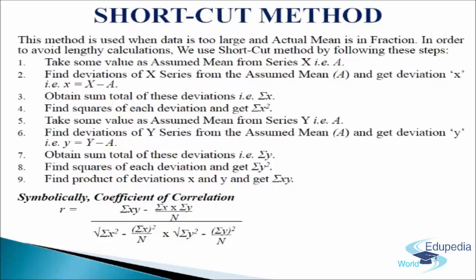After that we take some value as assumed mean from series y, that is 'a'. Then we find deviations of y series from the assumed mean a and get deviation y, that is y equals to y minus a. Next we obtain sum total of these deviations sigma y. Then we find square of each deviation and get sigma y square, and then we find the product of deviations x and y and get sigma xy. We use the following formula to find the coefficient of correlation: r equals to sigma xy minus sigma x into sigma y divided by n, all divided by the whole under root of sigma x square minus sigma x by n square, into under root sigma y square minus sigma y square divided by n.